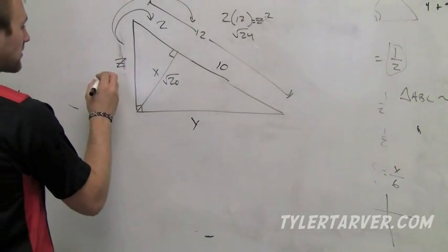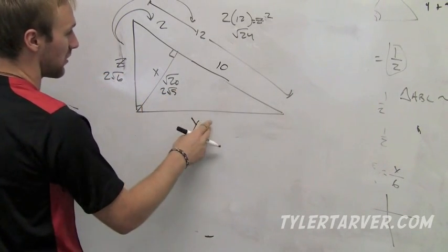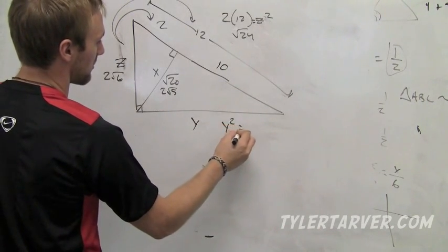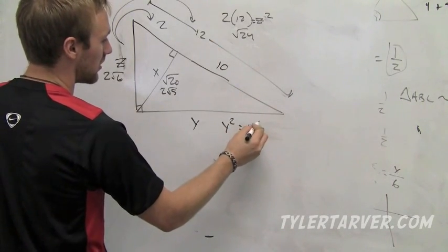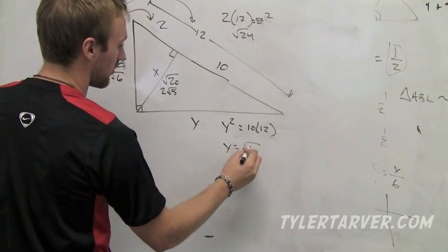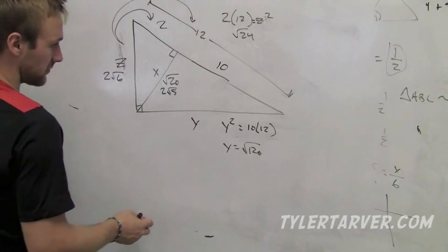And we do the same thing for y. Y equals the geometric mean of 10 and 12, that's 120. So y equals the square root of 120. We get simplest radical form for that and we get - you get a number. And that's it.